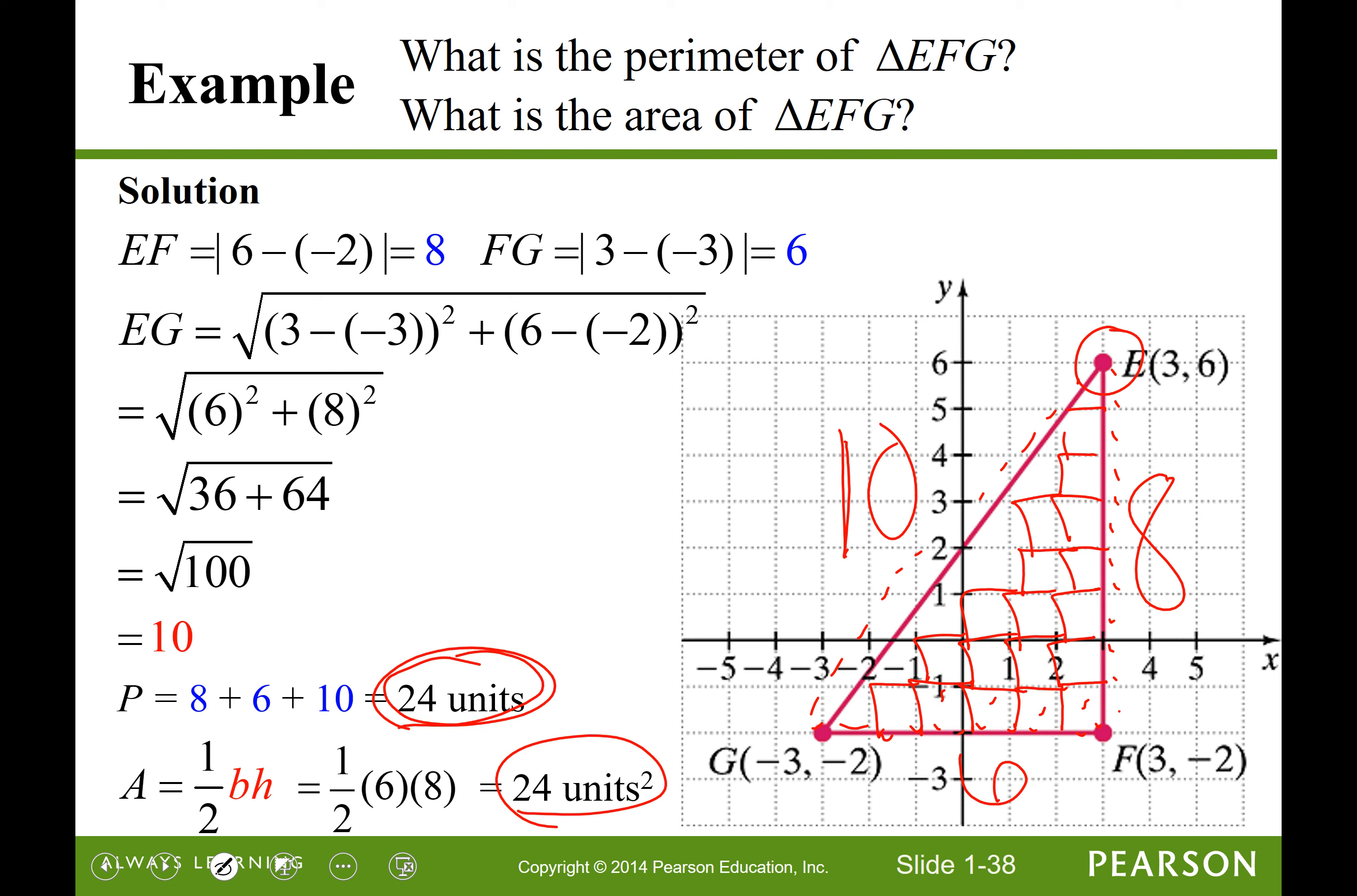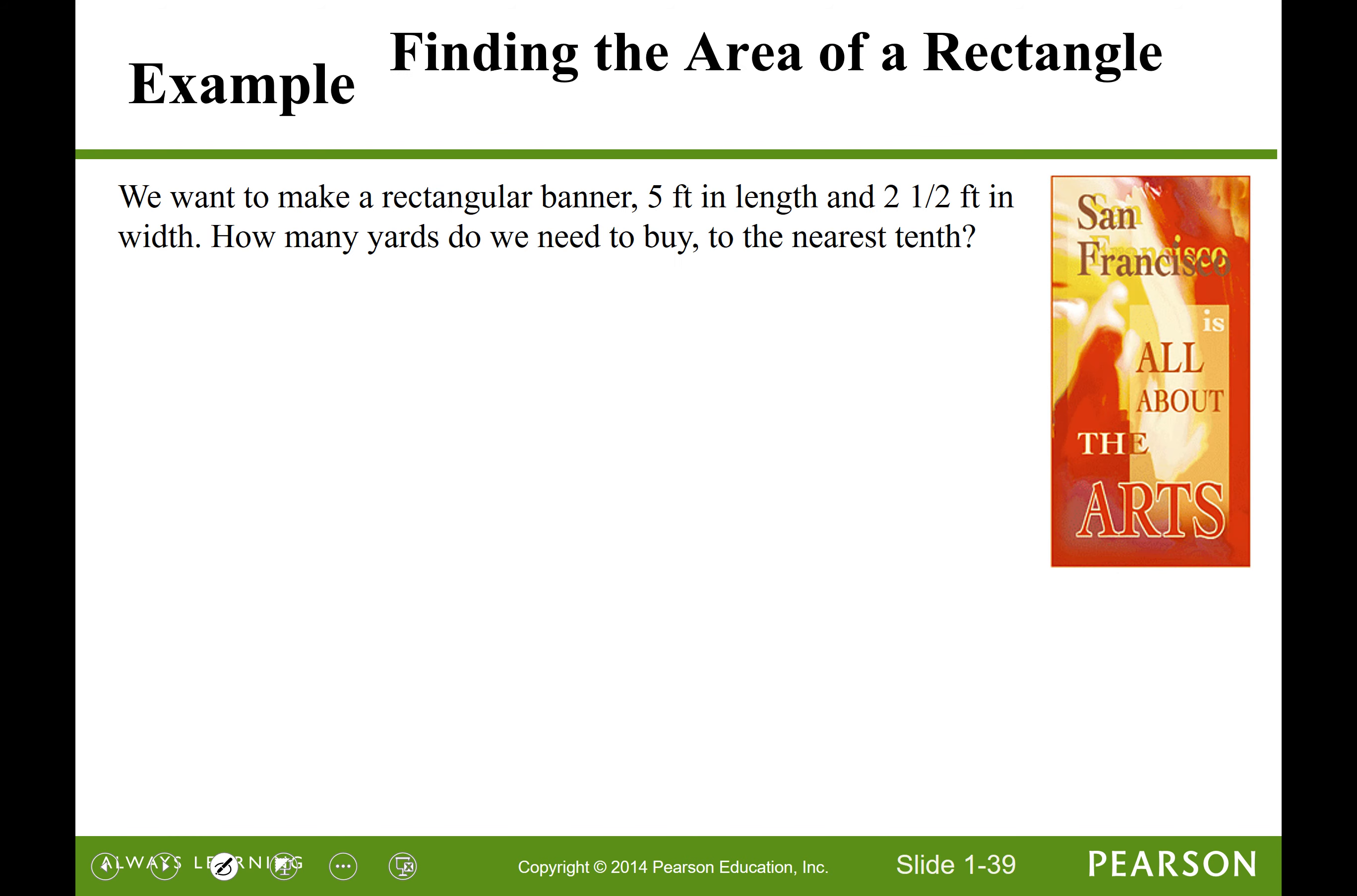So if we were to count how many of these squares it took to fill this triangle up, we would get 24. 1, 2, 3, 4, 5, 6, 7, 8, 9, 10, 11, 12, 13, 14, 15, 16, 17, 18. And then we've got to piece together some over here. Like 19, 20, 21, 22, 23, maybe 24. Something like that. It would take 24 little squares or square units to fill up this triangle. All right.